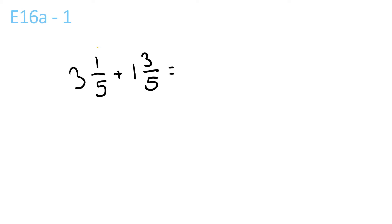So at first, the first step, you do the 1 plus 3, which is 4 over 5, because the bottom one stays the same. Then you get the 3 and the 1, and 3 plus 1 is equal to 4, so that is your answer. Very simple.